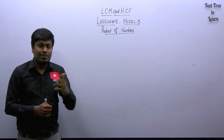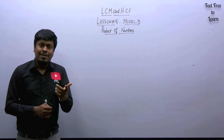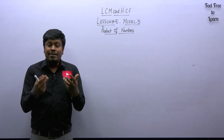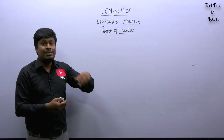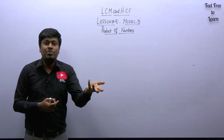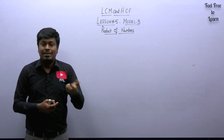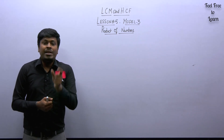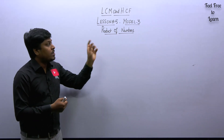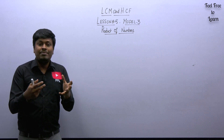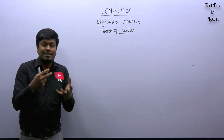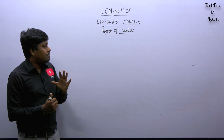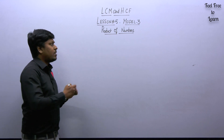Model number three is just a property of LCM and HCF — one of the properties. The model number three question is very simple; even if we teach this to kids, they can solve it easily. That's how easy model number three is. But you need to know the concept of 'product of numbers,' which is why we've taken this as a separate lesson. Just listen carefully.